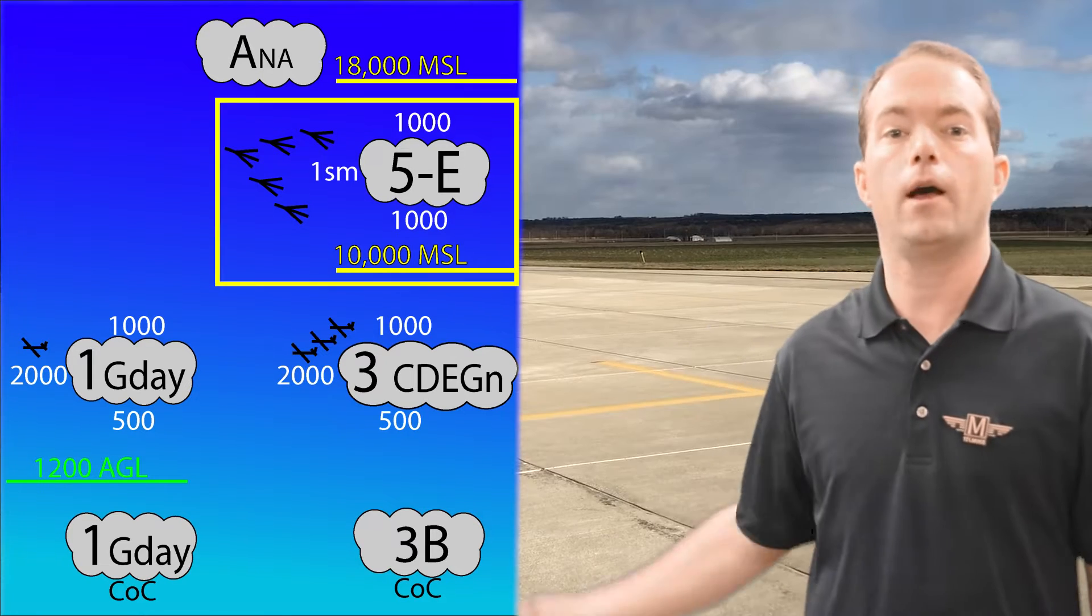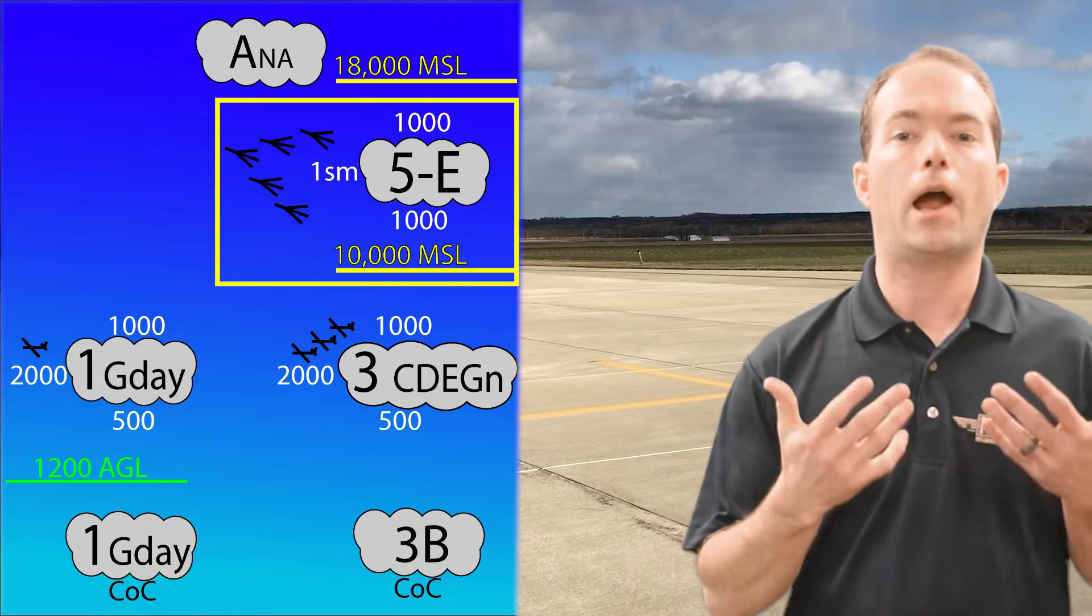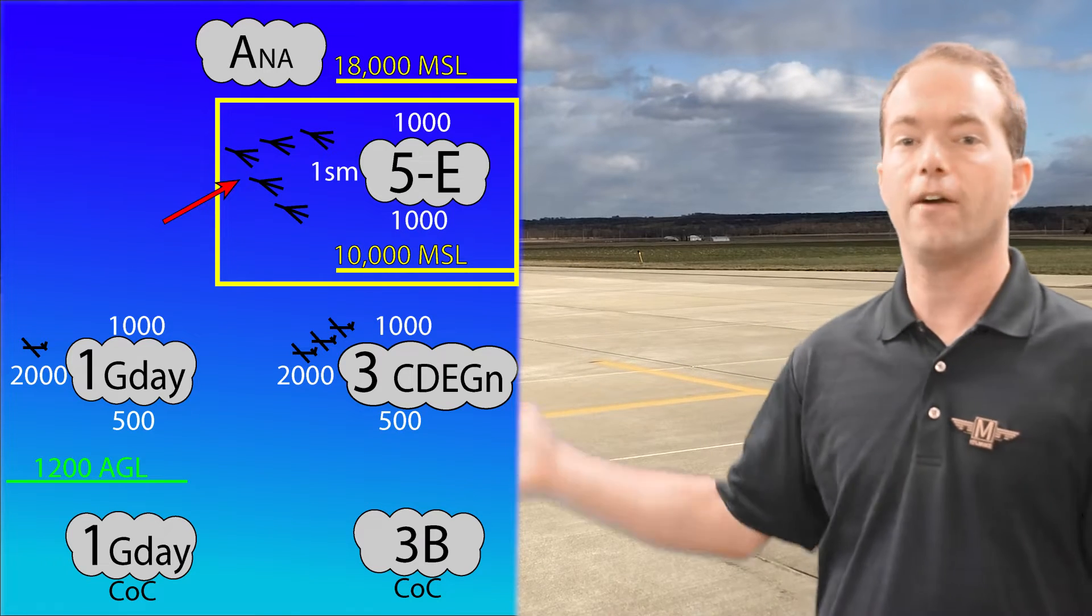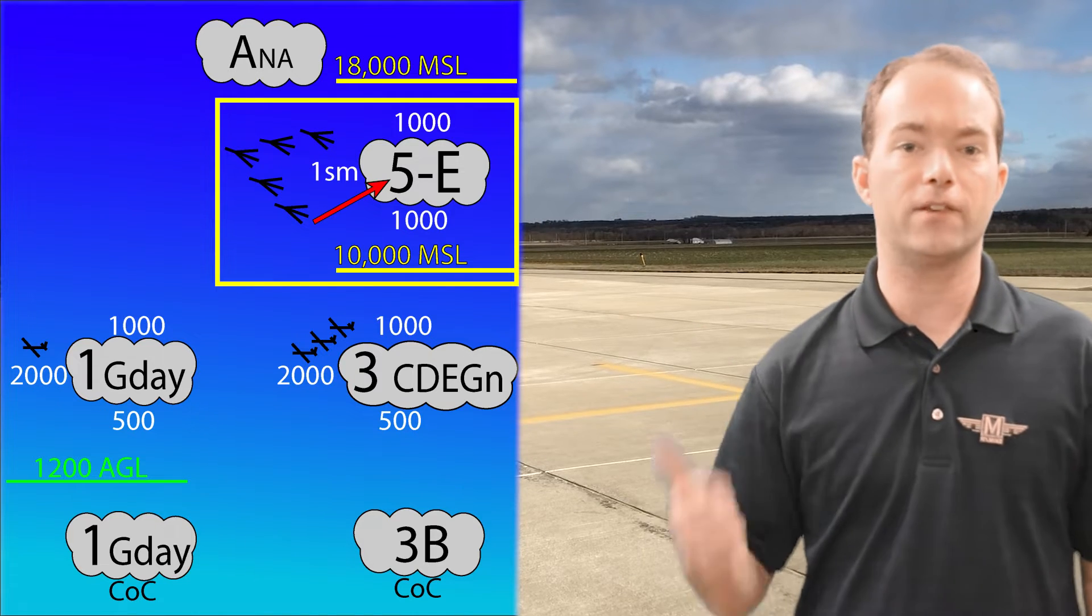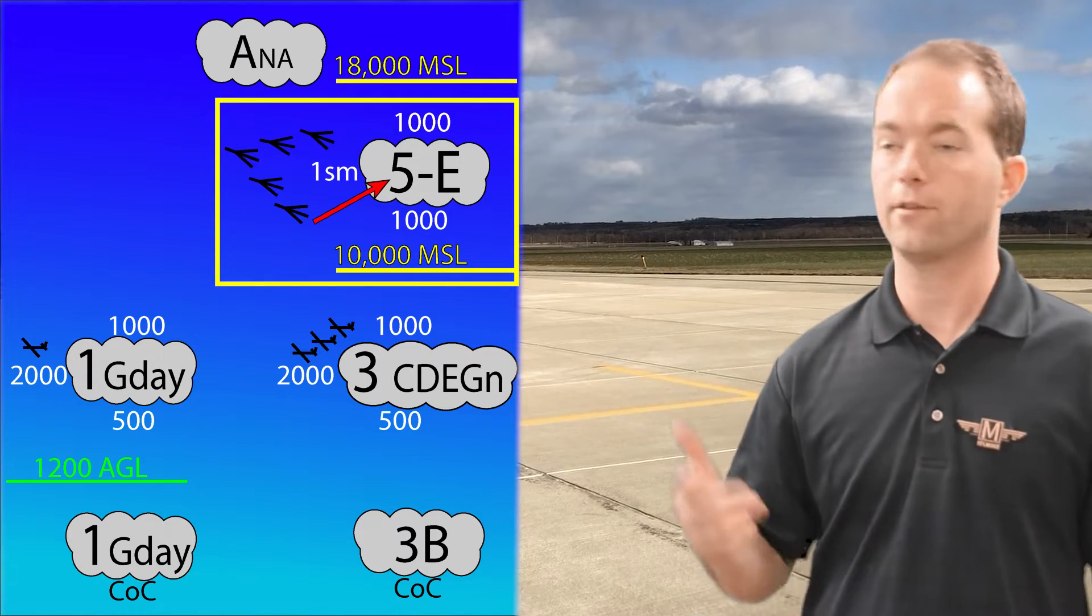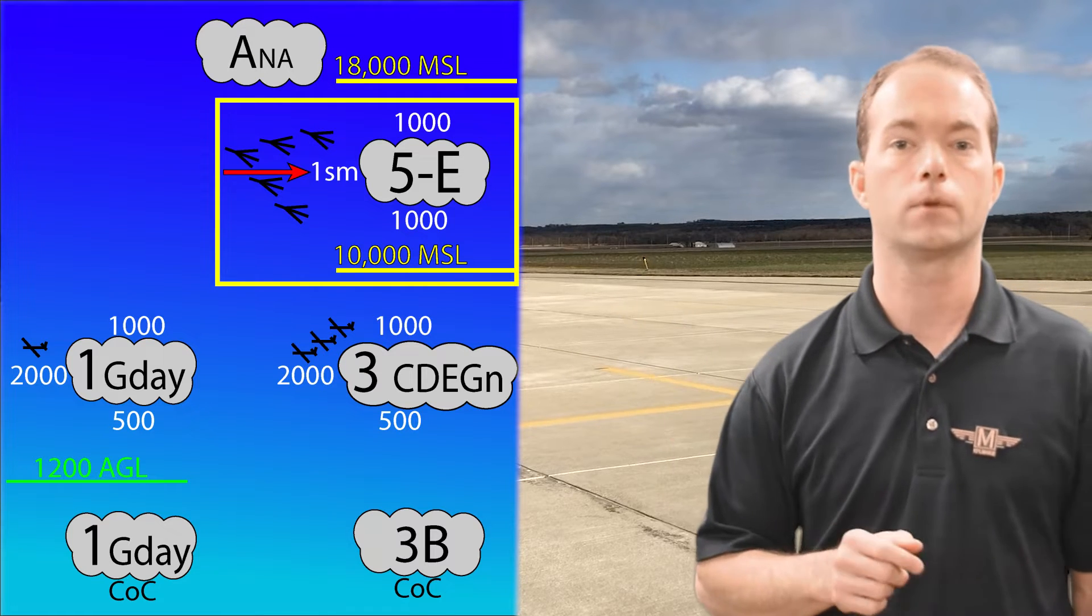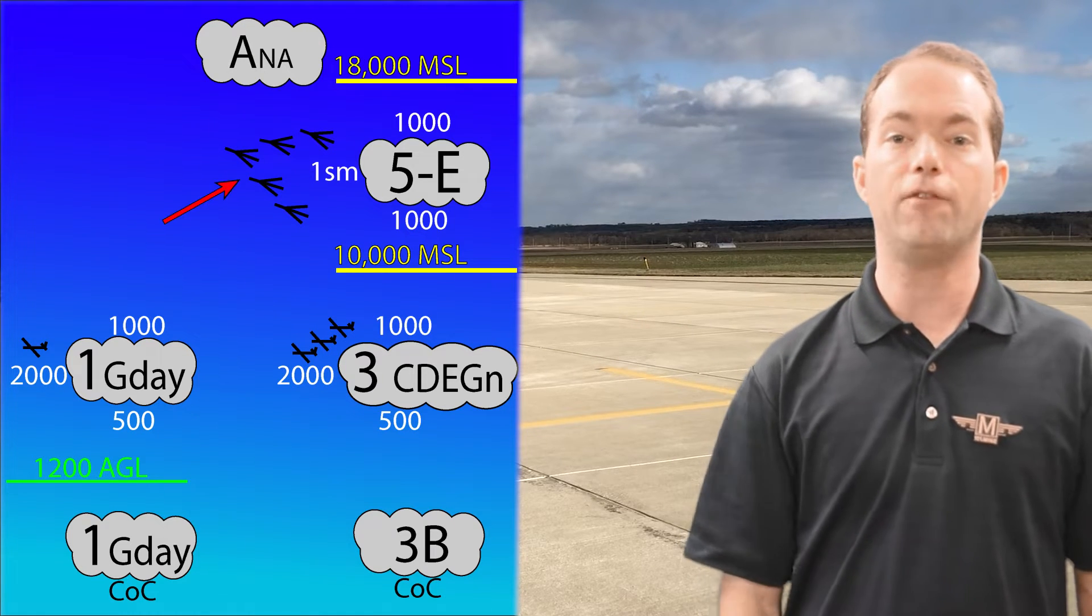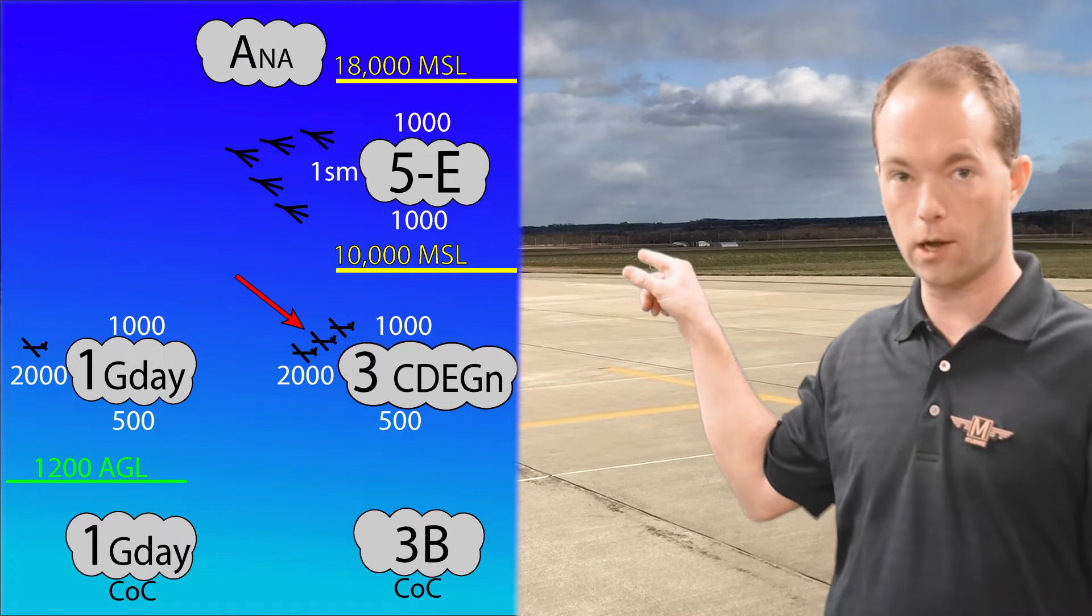The last group of rules covers class E at or above 10,000 MSL. And I remember this one as if there are 5 F-111 fighters way up there. The 5 is the flight visibility, and the 111 is 1,000 above, 1,000 below, and 1 mile horizontally. So remember, there are 5 F-111s up high, and there are 3 tiny 152s down low.